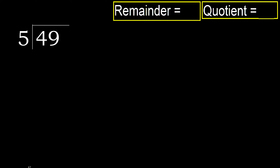49 divided by 5. 4 is less, therefore next. 49 is not less, therefore with 49: 5 — multiply by which number is nearest to 49, but not greater.